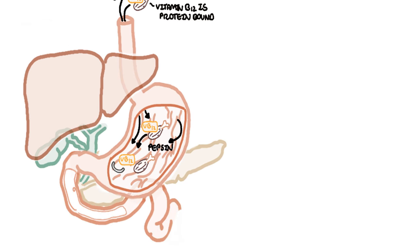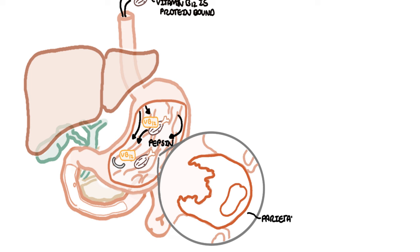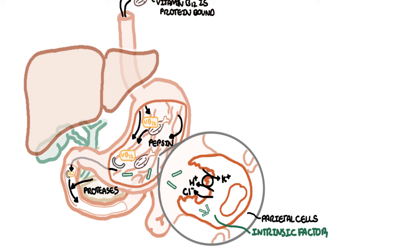The stomach contains many special cells called parietal cells, which produce the acid hydrochloric acid as well as another important substance, intrinsic factor. Intrinsic factor enters the small intestine together with the R binder vitamin B12 complex. Here the complex is exposed to pancreatic proteases secreted into the higher pH of the duodenum. The pancreatic proteases cleave off the R binders allowing the vitamin B12 to now bind to intrinsic factor, forming the vitamin B12 intrinsic factor complex.